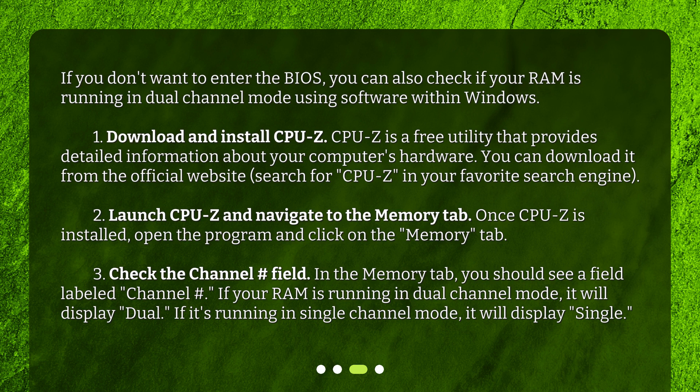Check the Channel field. In the Memory tab, you should see a field labeled Channel. If your RAM is running in dual channel mode, it will display Dual. If it's running in single channel mode, it will display Single.